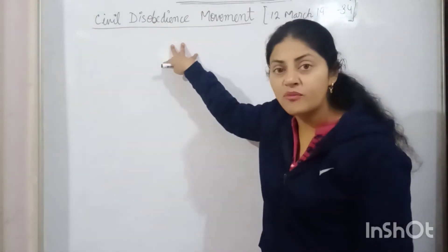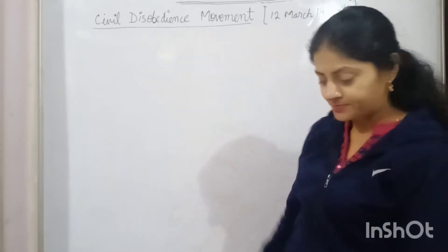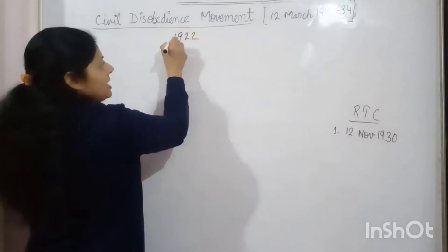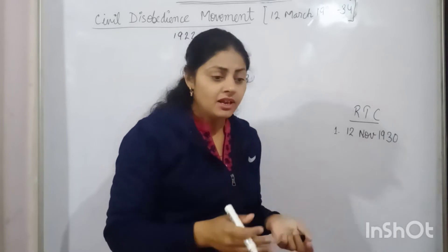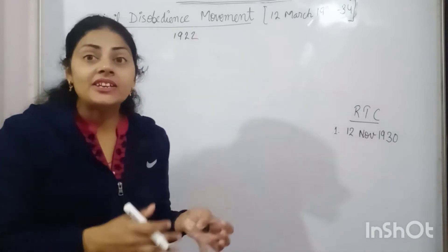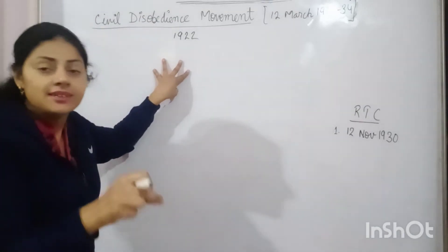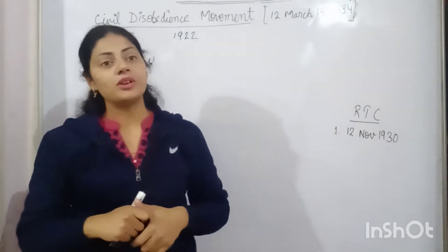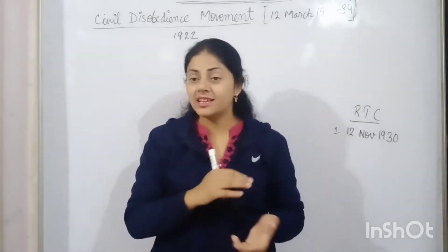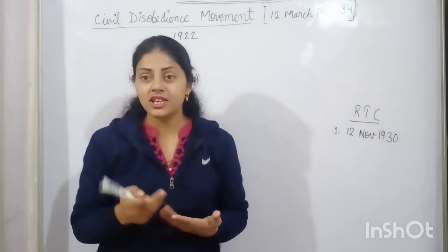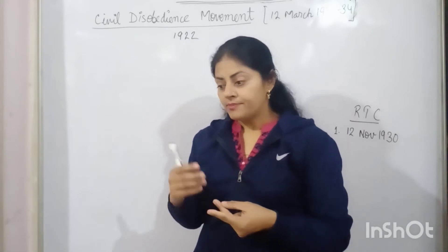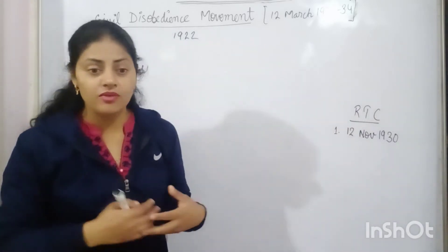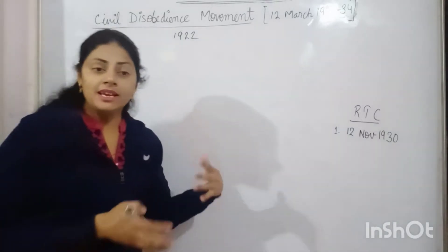We now start with the second major movement — the Civil Disobedience Movement. The Non-Cooperation Movement was withdrawn in 1922, and after that Mahatma Gandhi moved back from active politics. He continued with his constructive programs — working for the removal of untouchability, popularization of khadi and swadeshi goods, and Hindu-Muslim unity.